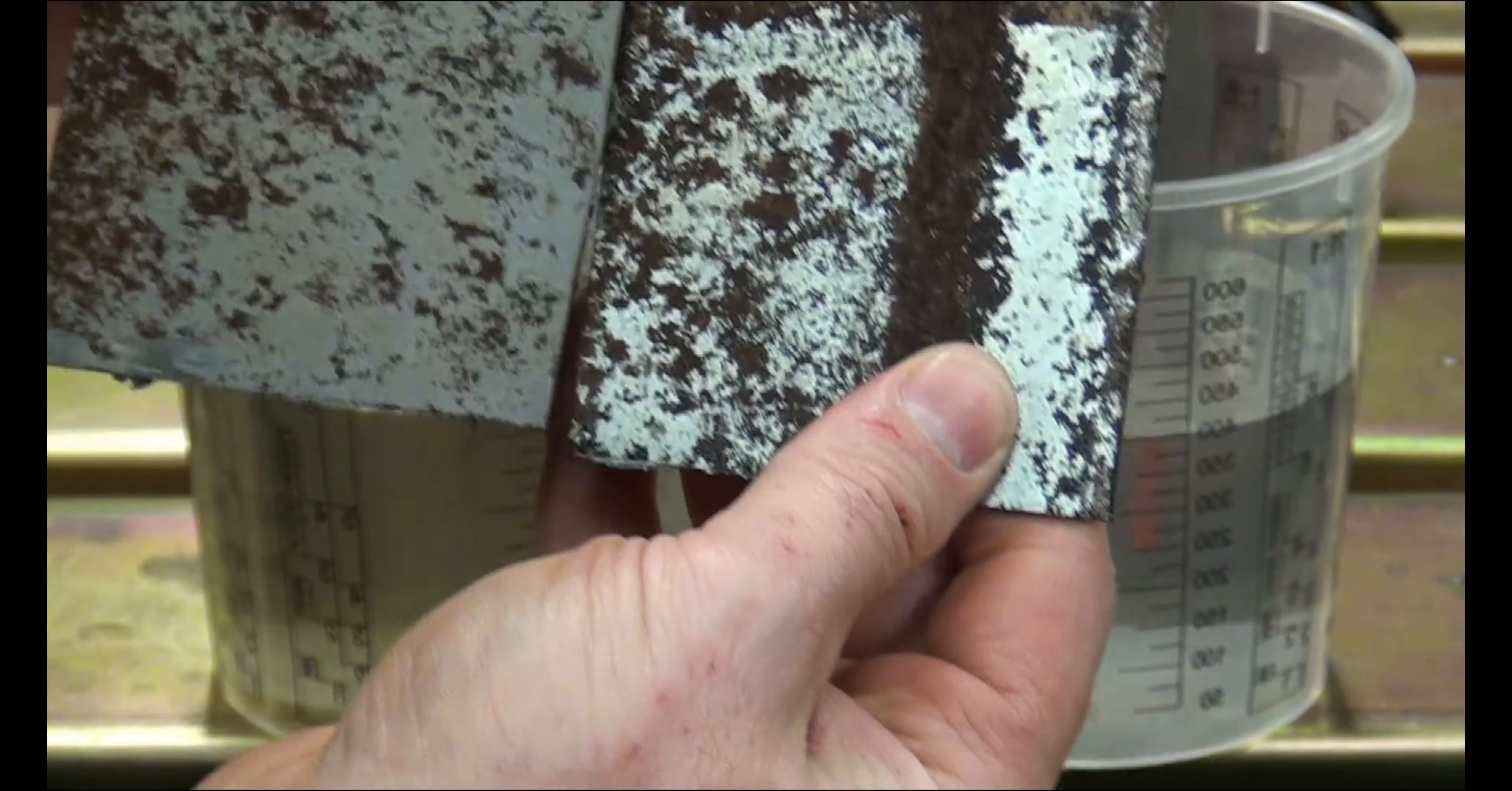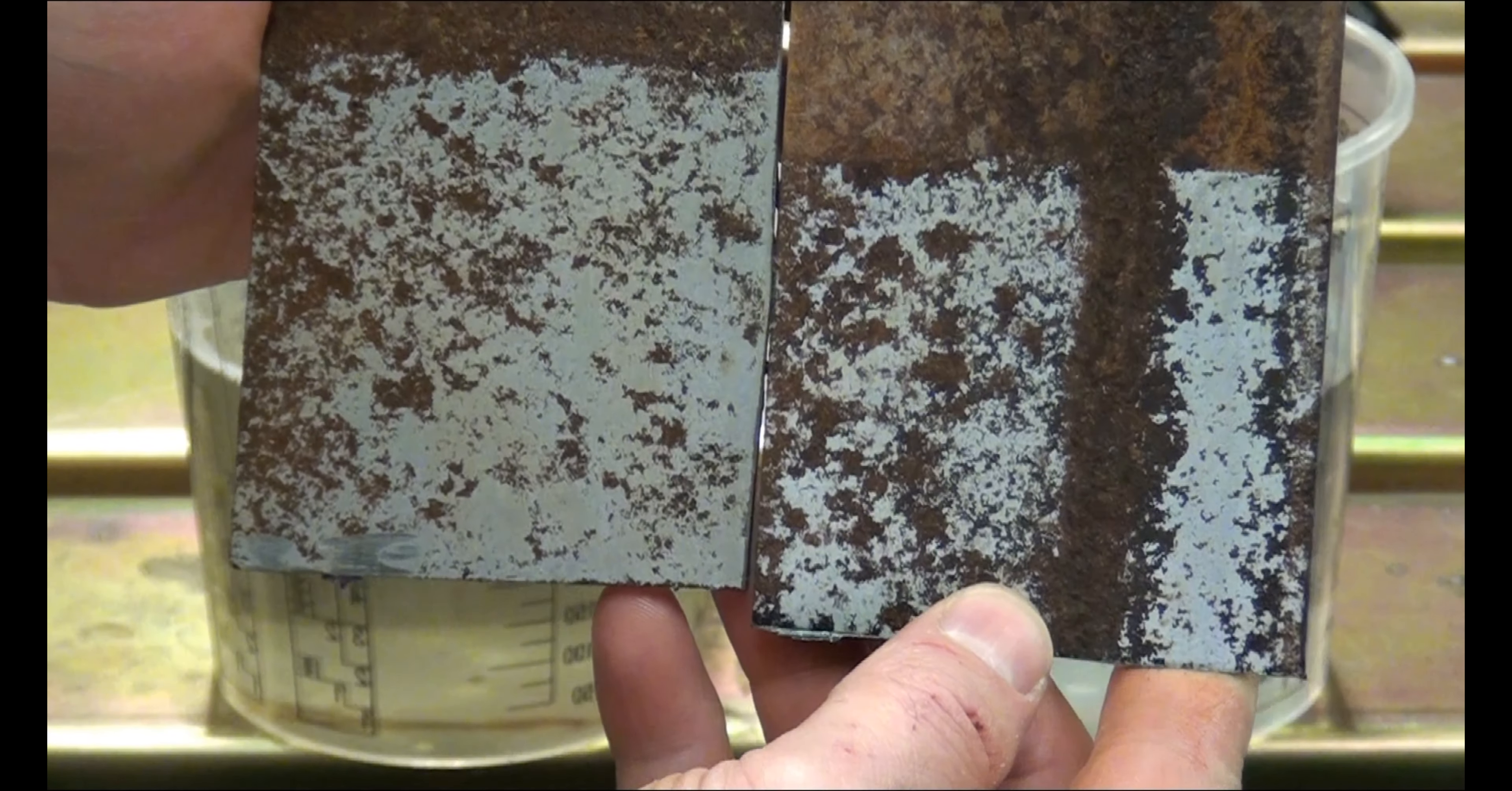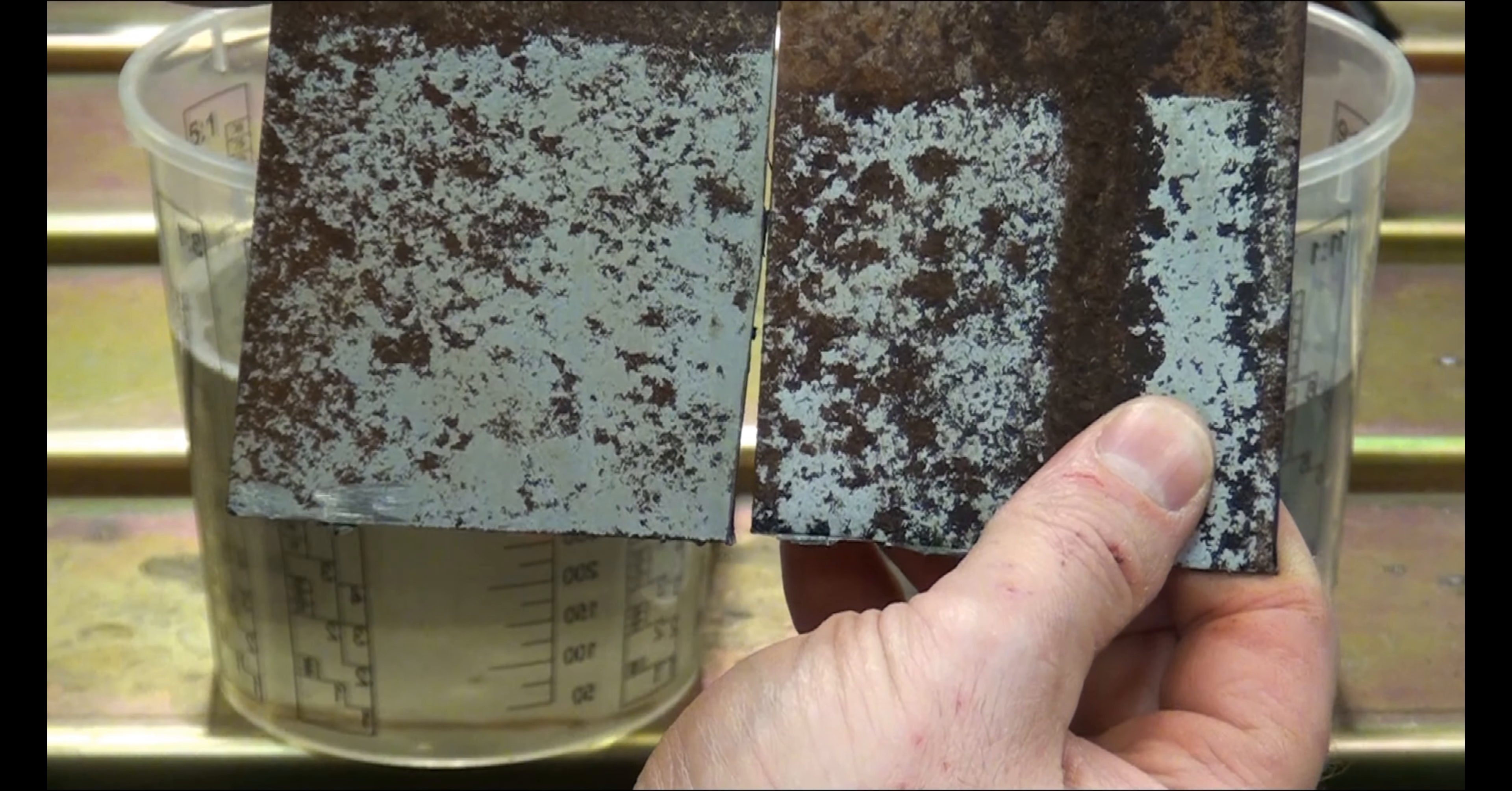As you can see, the product did work as intended. I think it's just going to take a lot longer in the solution to remove more rust. It could be a decent product, but with Rust Release, it seems to work a lot faster than other products on the market. This is the Rust 911 and this is the Rust Release. I'll flip them over to the backside so you can see what those look like. Two good products, but I'd go with Rust Release on this particular test—it just seems to work a bit faster.